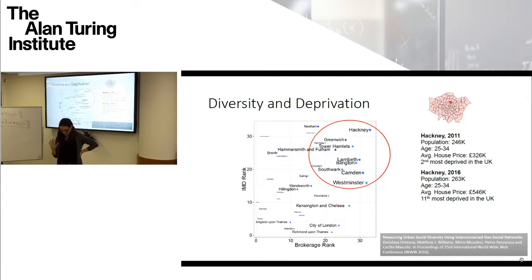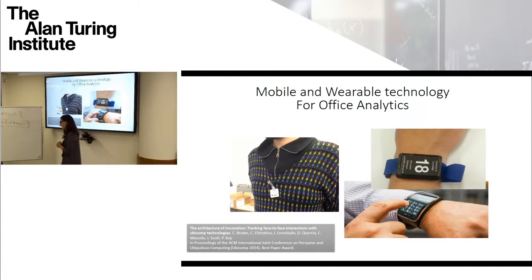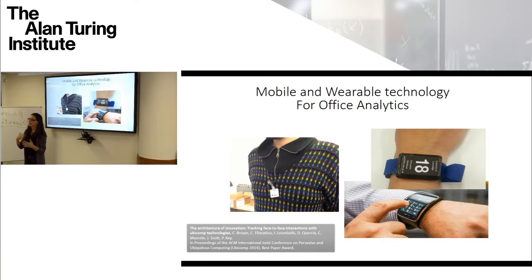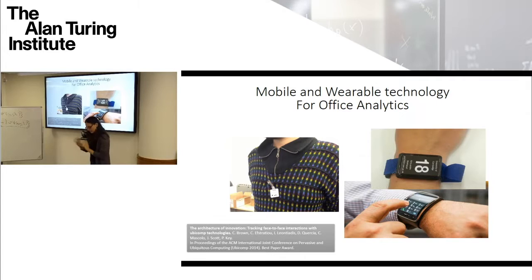The second area is work on office analytics. Office analytics are important. We work with the Bartlett School at UCL to try to understand how people use space, how face-to-face interactions happen in office environments, and how we can foster them with space design. We hope to do a study at the Alan Turing in the next month or two with a different kind of technology.